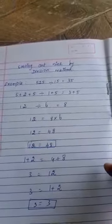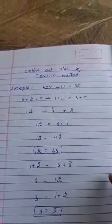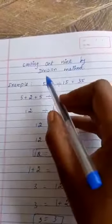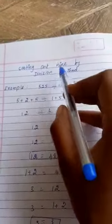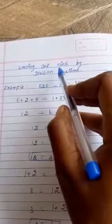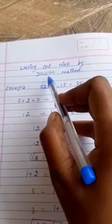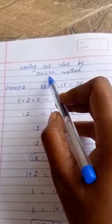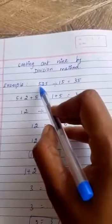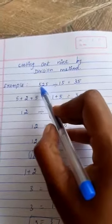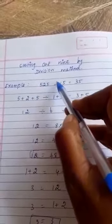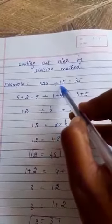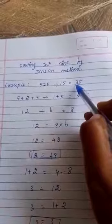Good morning students. Today in math we are discussing casting out 9 by division method. In last class we have seen casting out 9 by multiplication method. Today we will see the division method. For example, 525 divided by 15 equals 35.